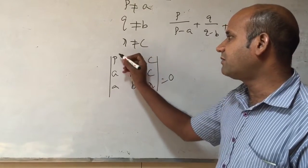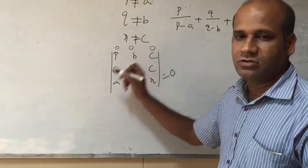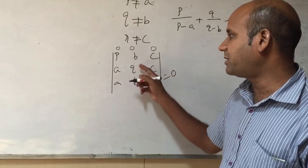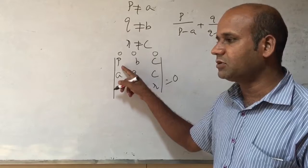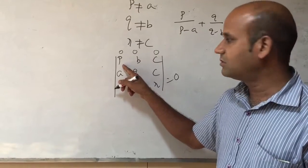Therefore, I am going to take the first row as 0, 0, 0. You know very well about this property: if one of the rows or one of the columns is 0, 0, 0, the value of the determinant is 0.